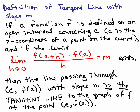Here's the definition, and it's quite a mouthful. Definition of a tangent line with slope m. If a function f is defined on an open interval containing c, this means it's a curve without any breaks basically. C is just the x-coordinate of the point on the curve, and if the limit, here's the limit, the limit as h approaches 0,